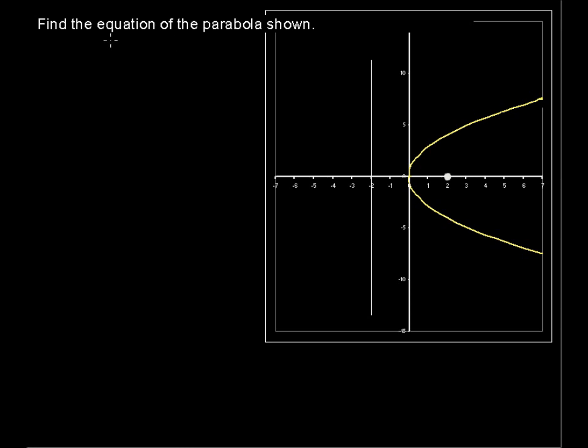Find the equation of the parabola shown. We have a parabola opening to the right. The directrix is at x equals negative 2. It's that line. And the focus is at the point.